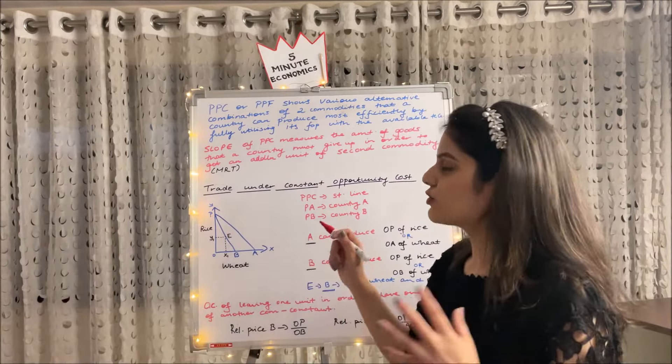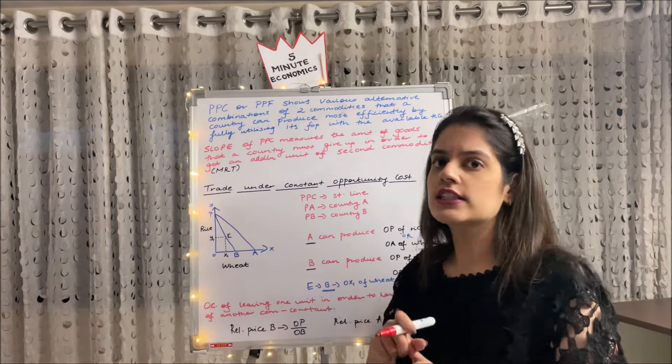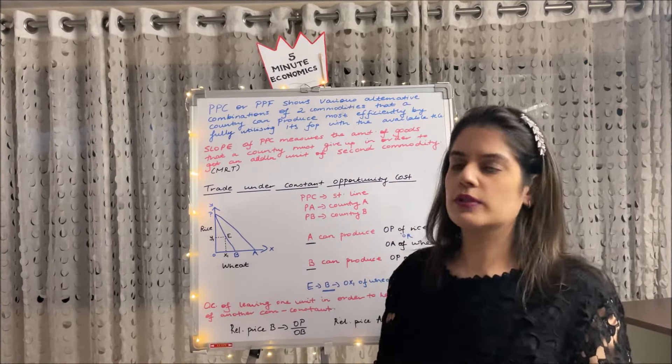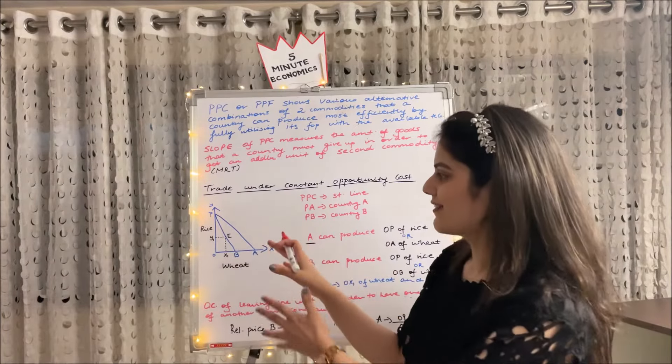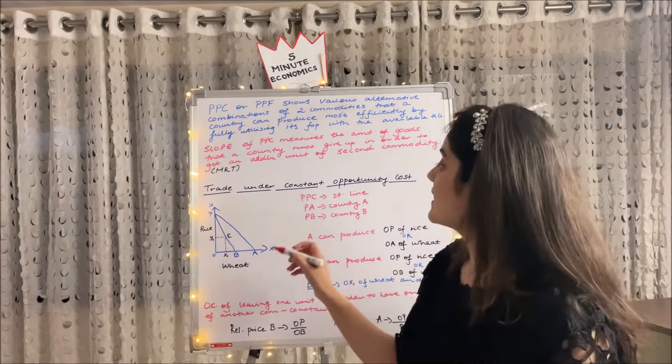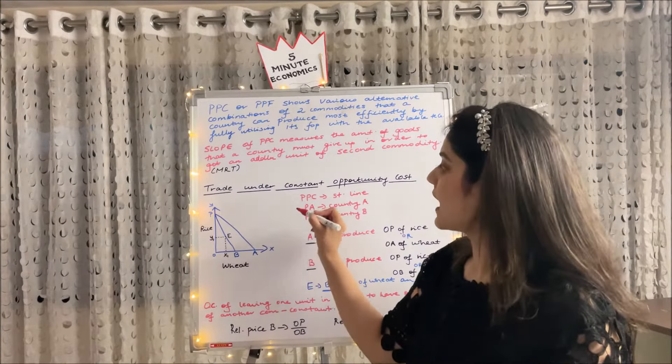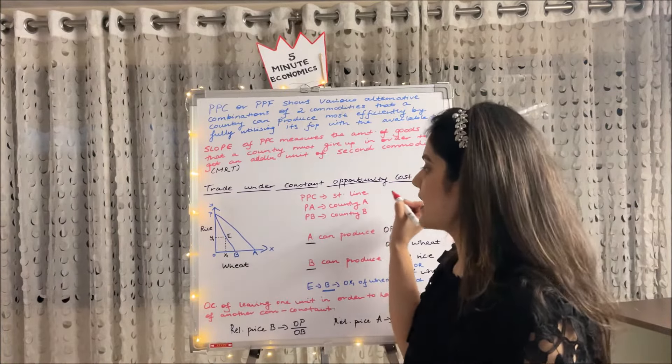So basically, here we have three types of opportunity costs: constant, increasing, and decreasing. Firstly, we'll be talking about trade under constant opportunity cost. So here is our little diagram, and the most important thing which one should know is that under the constant opportunity cost, our PPC is a straight line.